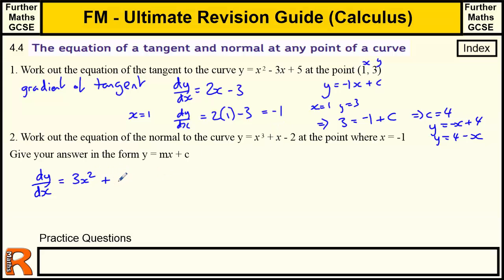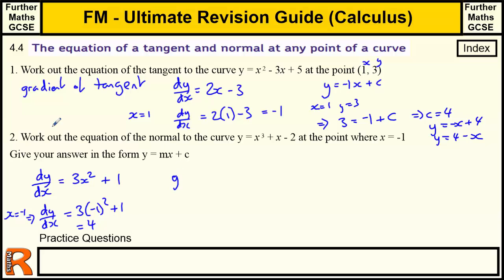The differential of x cubed is 3x squared. The differential of x is just 1 because it's 1x. And the minus 2 disappears. So the gradient when x equals minus 1 is: 3 lots of minus 1 squared plus 1. Minus 1 squared is 1, times by 3 is 3, plus 1 is 4. So the gradient of the tangent is 4. Be careful here — that's the gradient of the tangent.